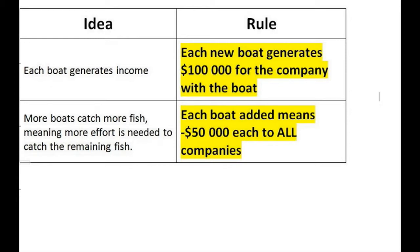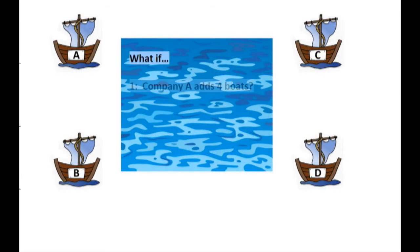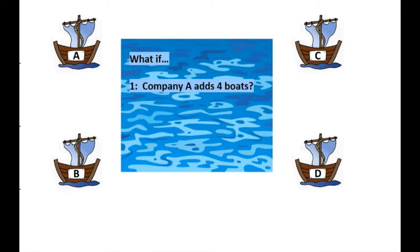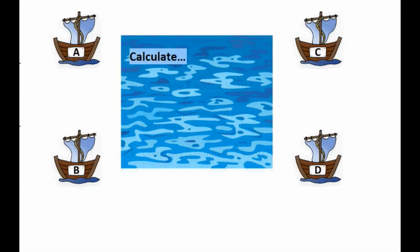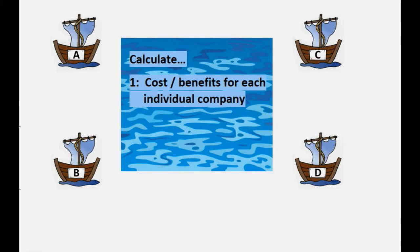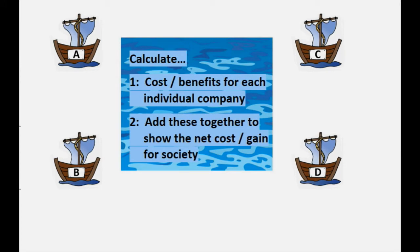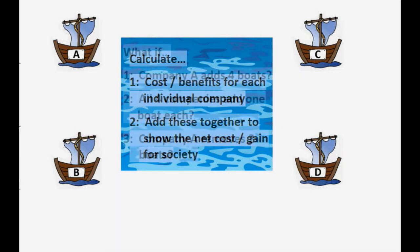With these rules in mind, I have three questions I would like you to answer. What if Company A adds four more boats? What if all four companies add one boat each? And what if Company A removes two boats? I want you to calculate the cost or benefit for each individual company, and secondly, add all these costs and benefits together to work out the net cost or net gain for society.